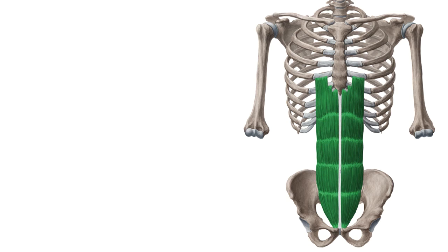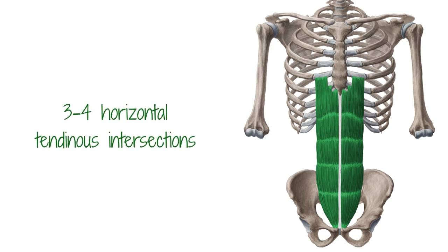It has 3 to 4 horizontal tendinous intersections which are adhered to the anterior layer of the rectus sheath, giving it its multi-bellied appearance — although anyone with a six-pack or washboard abs would probably not appreciate the term multi-bellied. These are traces of the segmental arrangement during embryogenesis, also known as metamerism.